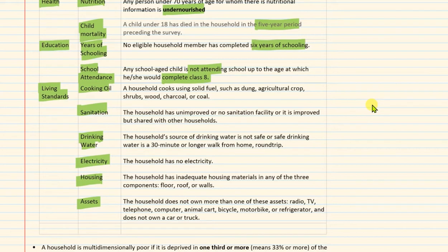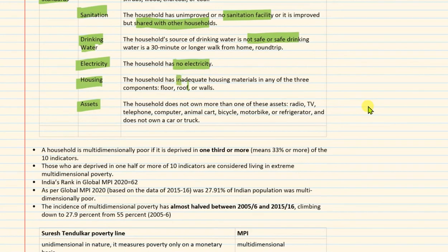If the sanitation facility is shared with another household, or if safe drinking water is not available and people have to travel far for water, or if there is no electricity — then that household will be termed as deprived. If a household has inadequate housing material — for example, a kachcha floor, kachchi roof, or walls that are inappropriate or made of inadequate material — then that house will also be termed as deprived.